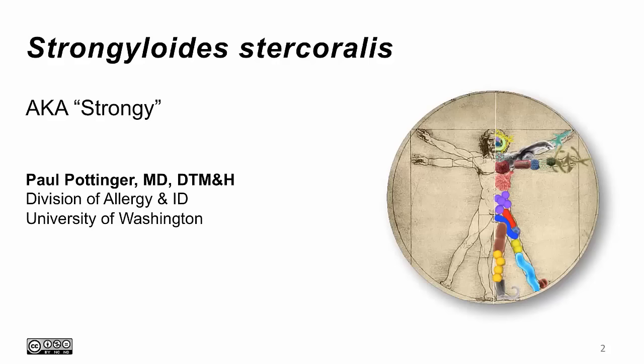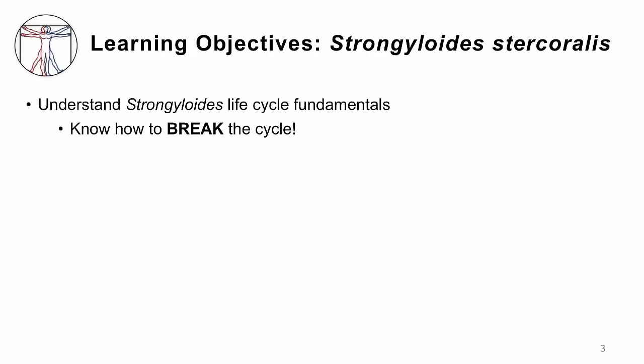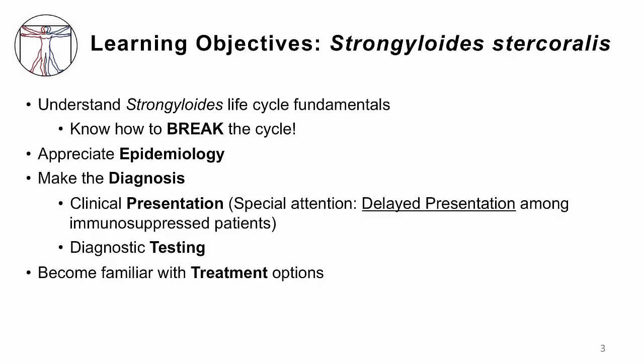The objectives for Strongy are to understand the life cycle so that you can break that cycle. Know who gets it and where, but please be able to make the diagnosis. You have to recognize the clinical presentation with special attention to the fact that in some cases, patients with Strongyloides will present in a very delayed fashion, and it could be catastrophic for patients who are heavily immunosuppressed. You need to know how to make the diagnosis and become familiar with the principles of treatment.